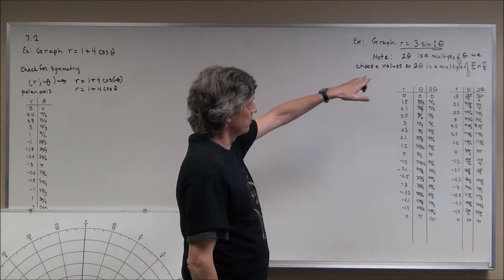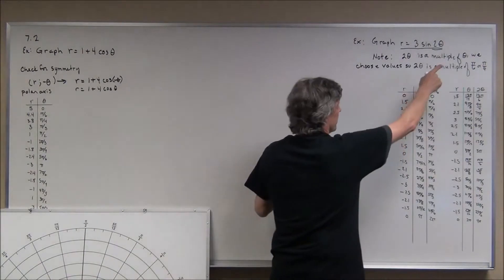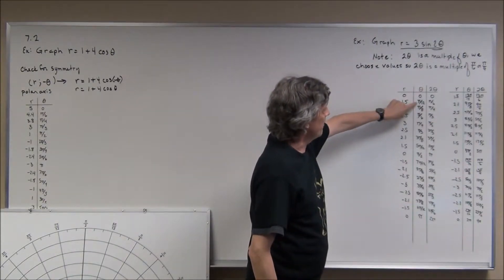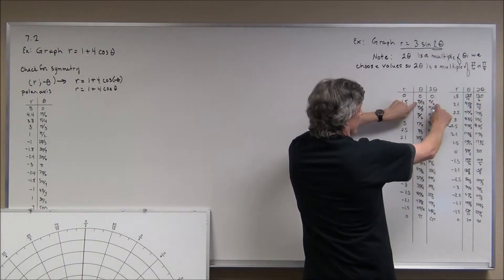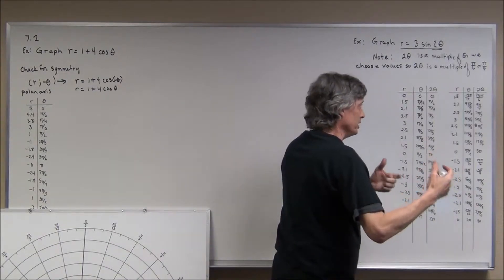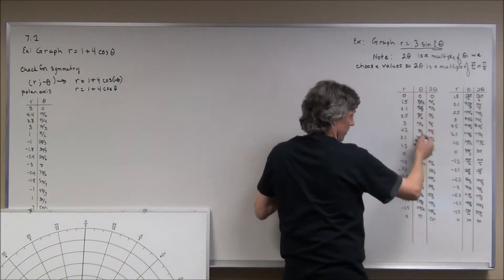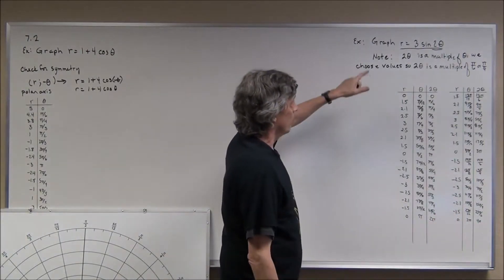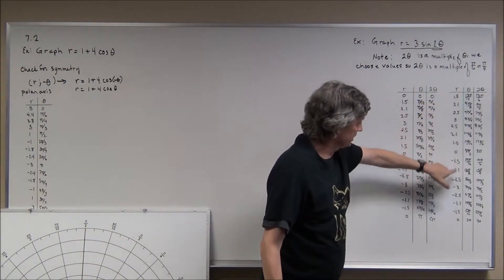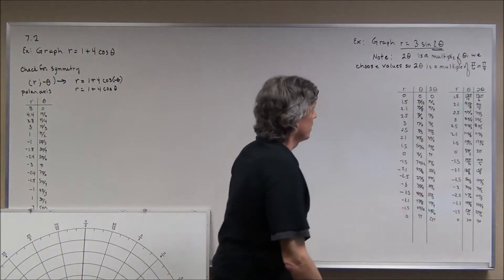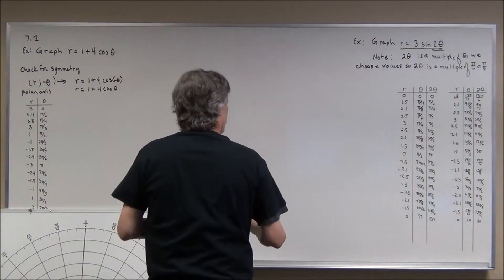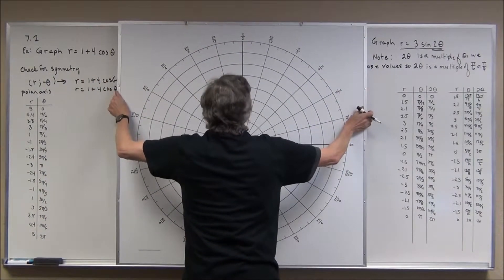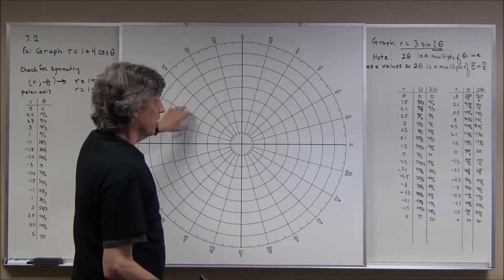If the argument is a multiple of theta — in this case 2θ — we need to pick angles so that when we multiply by 2 we get multiples of π/6 and π/4. For example, if θ = π/12, then 2θ = π/6 and we can find sin(π/6). So I cut each angle in half. My theta values go from 0 to 2π, but 2θ goes from 0 to 4π. It's going to be interesting to see what this turns out to look like.